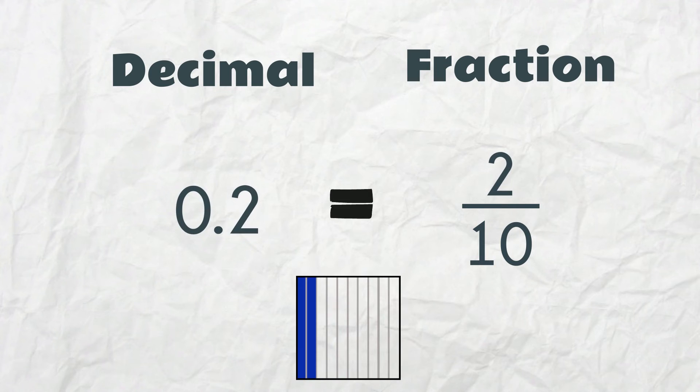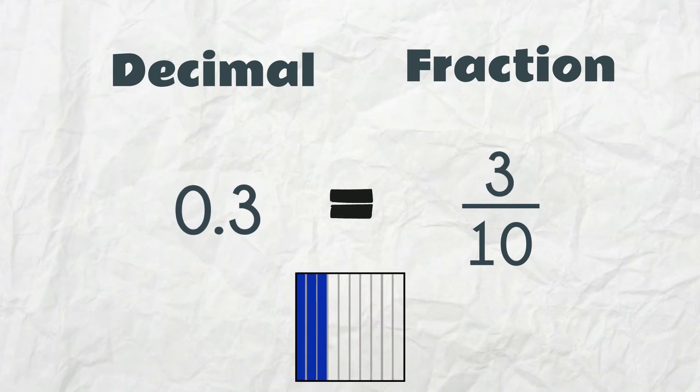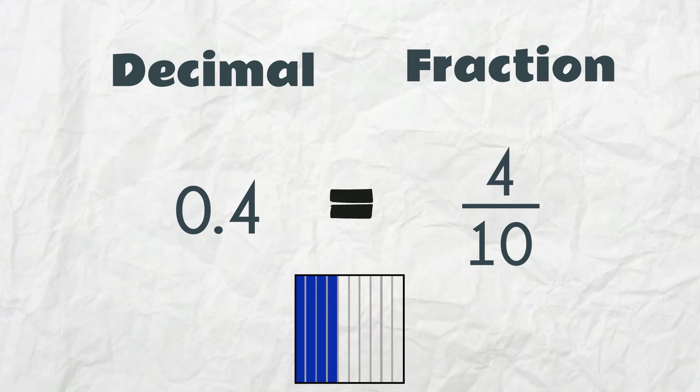Here we have 2 tenths, or 0.2. 3 tenths, 4 tenths, 5 tenths.